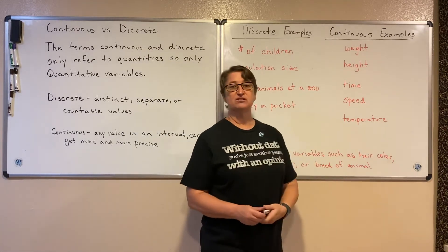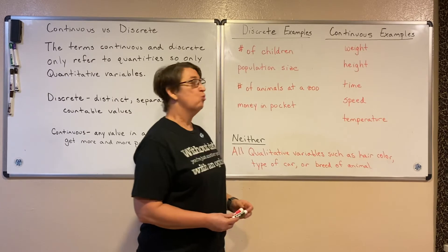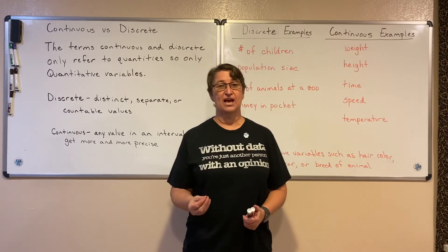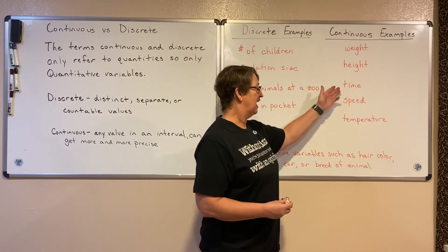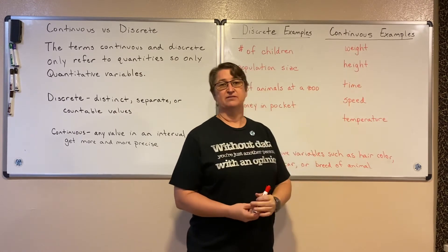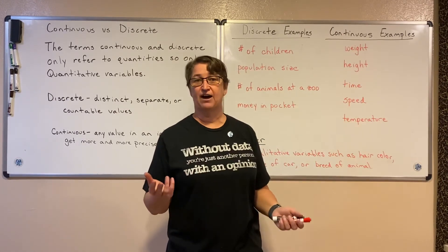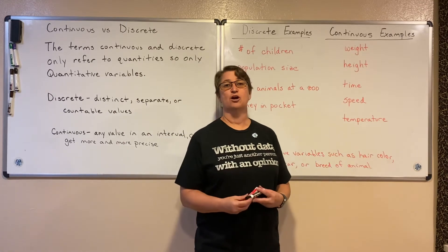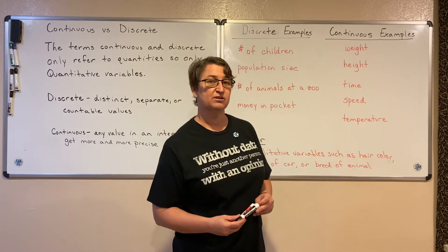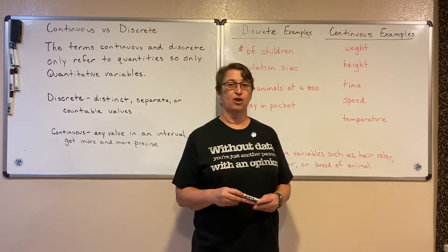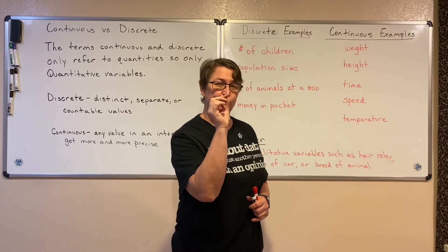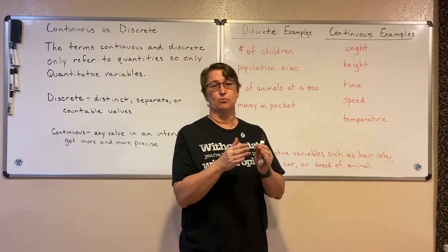Here are some examples of continuous variables. Weight can be measured more and more precisely, as can height, time, speed, and temperature. For instance, I might say that I'm five foot five inches, and someone else might come along and say they're five foot five and a half inches, and someone else might measure it even more precisely, getting in between those two numbers.